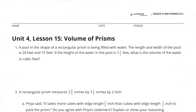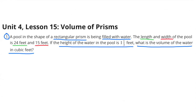Unit 4, Lesson 15: Volume of Prisms. Number one: a pool in the shape of a rectangular prism is being filled with water. The length and width of the pool are 24 feet and 15 feet. If the height of the water in the pool is one and one-third feet, what is the volume of the water in cubic feet?